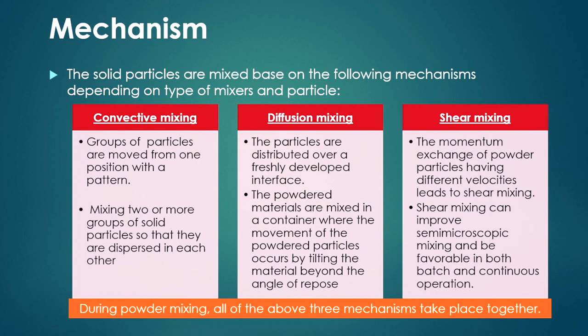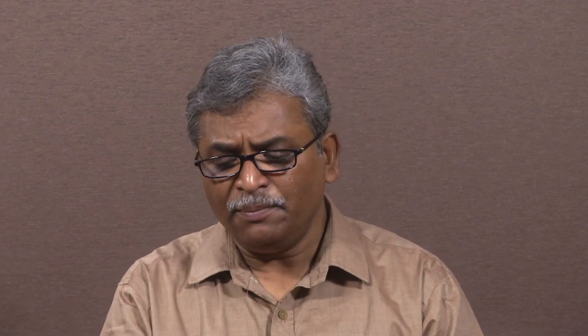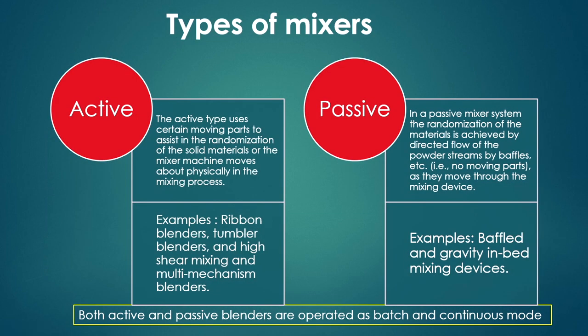This type of mixing phenomena is called diffusion mixing. The third type is shear mixing, where there is momentum exchange or energy transport to powder particles having different velocities, giving shear mixing. Materials are randomly transported in a particular pan and then mixed with other materials at different velocities. Shear mixing can improve semi-microscopic mixing and be favorable in both batch and continuous operation. During powder mixing, all three mechanisms take place together.